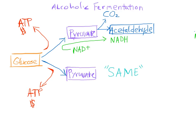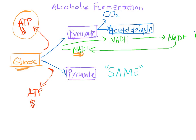Now the goal is to make lots of ATP. And in order to do that, we need to split a lot of glucose, and that's only possible if we have a big supply of NAD+. So the only way to obtain a big supply of NAD+ is to recycle the NADH back into NAD+. That way we can use it again and again and split as much sugar as we want. And the only way to do that is to convert the acetyl aldehyde into ethanol, which is toxic.